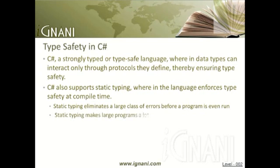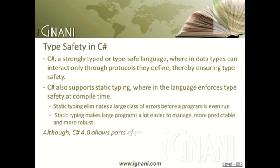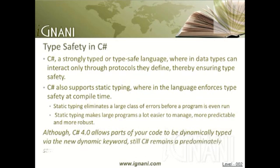Static typing makes large programs a lot easier to manage, more predictable, and more robust. In Visual Studio, it allows tools such as IntelliSense to help you write a program easily, since it knows beforehand a given variable's type, and hence the methods and properties it provides. Although C-sharp version 4.0 allows parts of your code to be dynamically typed via the new dynamic keyword, C-sharp remains a predominantly statically typed language.